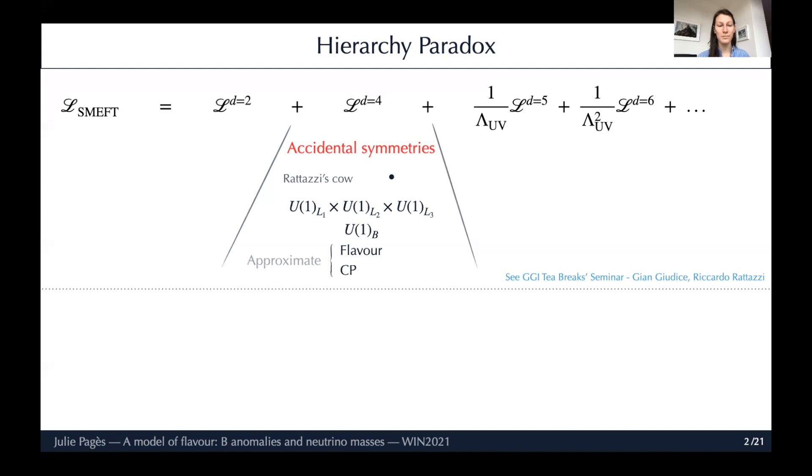In the standard model, we have several accidental symmetries: one lepton number for each family, baryon number, flavour, and CP that are approximate. Simplicity means two things in this context - the fact that the model is simple because it has multiple accidental symmetries, and the fact that it stays so until a very high scale, which can be deduced by assuming order-one Wilson coefficients in the effective theory.